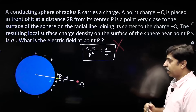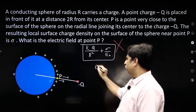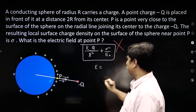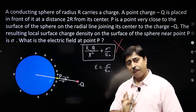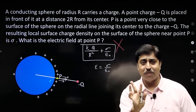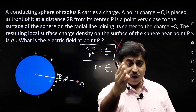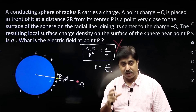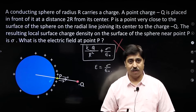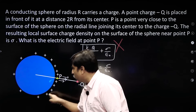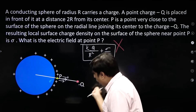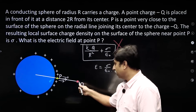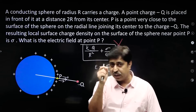The correct answer is that the field at point P is normal to the surface of the conductor and its magnitude is simply sigma by epsilon naught. Many of you would start arguing — will this charge have no effect here? Yes, this charge will have an effect here, no doubt about it. The field at P is created due to all the charges on the sphere as well as the minus q charge — that is a fact.